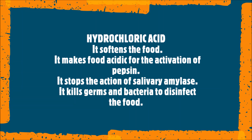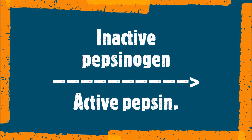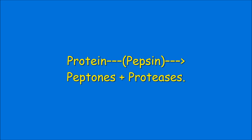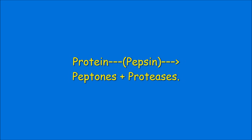The functions of hydrochloric acid: it makes the food acidic for the activation of pepsin, stops the action of salivary amylase, kills germs and bacteria to disinfect the food, and converts the inactive pepsinogen and pro-renin into active pepsin and renin. The function of pepsin is to hydrolyze proteins into soluble proteoses and peptones. Renin is an enzyme active only in infants; its main function is to convert the soluble milk protein casein into insoluble paracasein, causing milk to stay in the stomach longer.